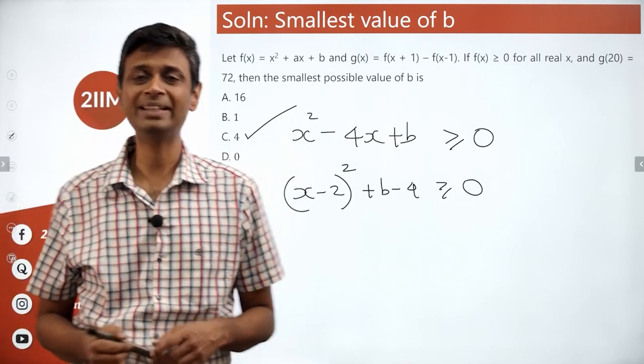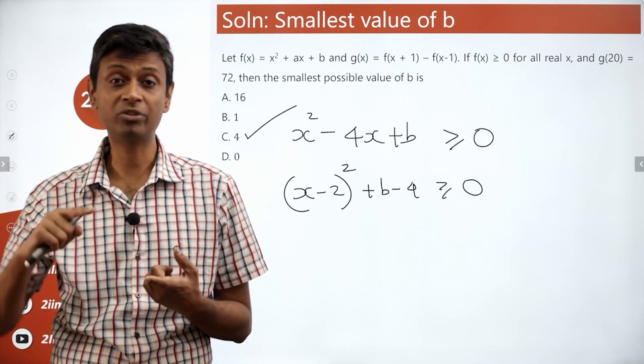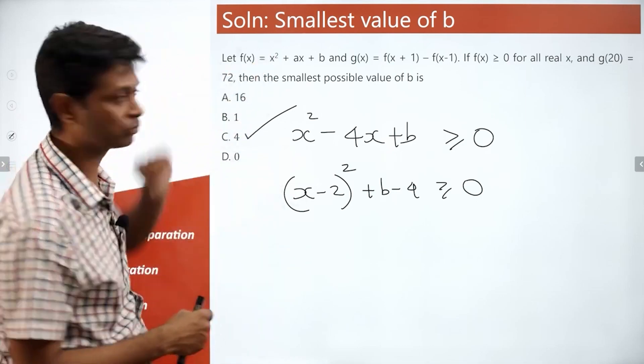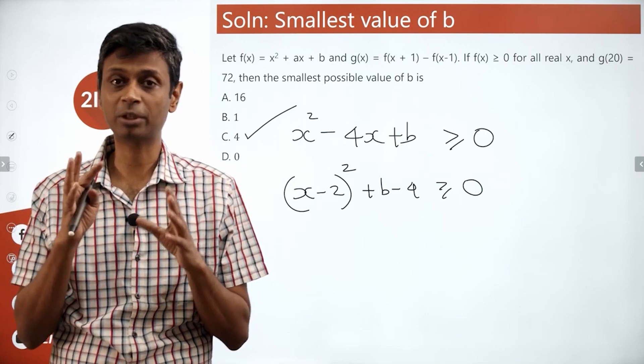Wonderful question. First we find the expression for g(x), then plug in g(20) = 72 and find a. Then come back to this expression, when you go to that expression.